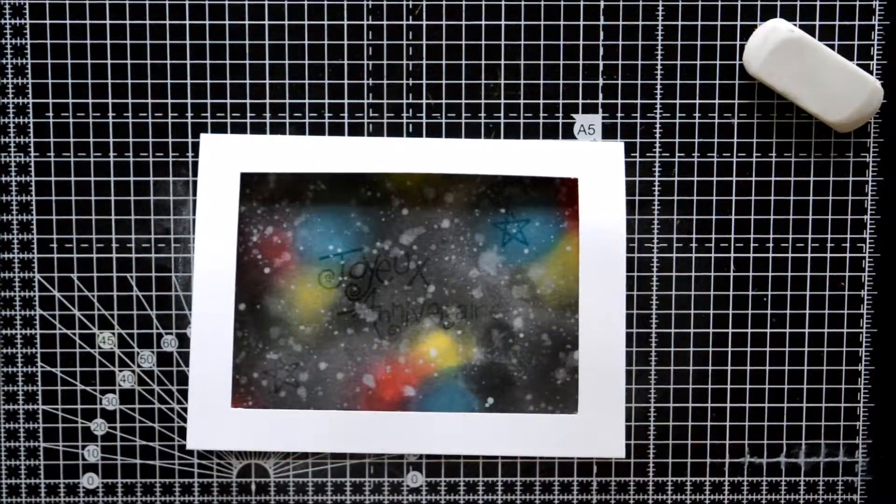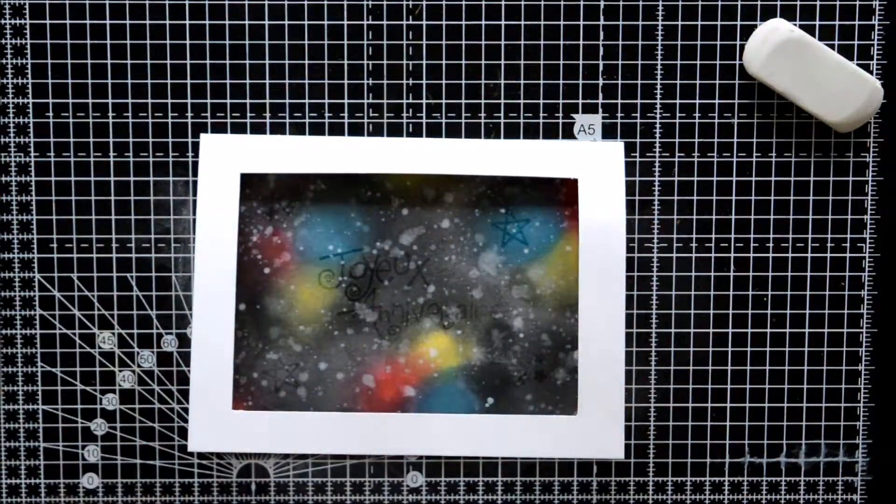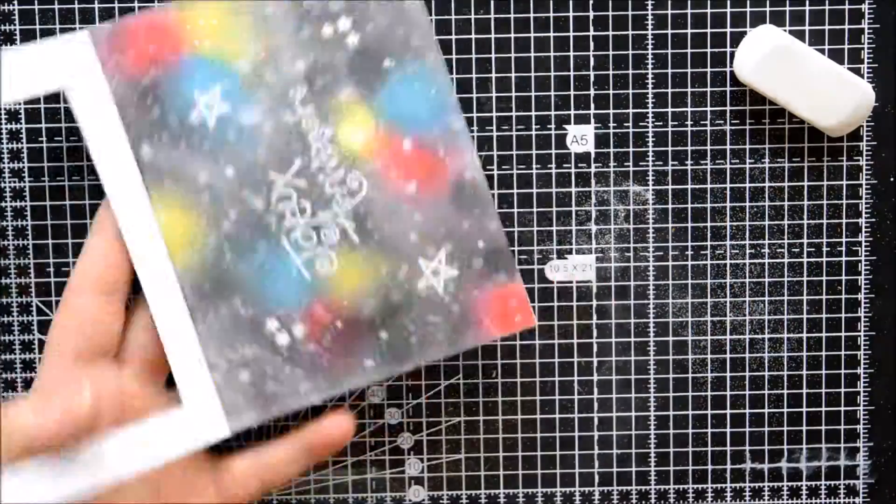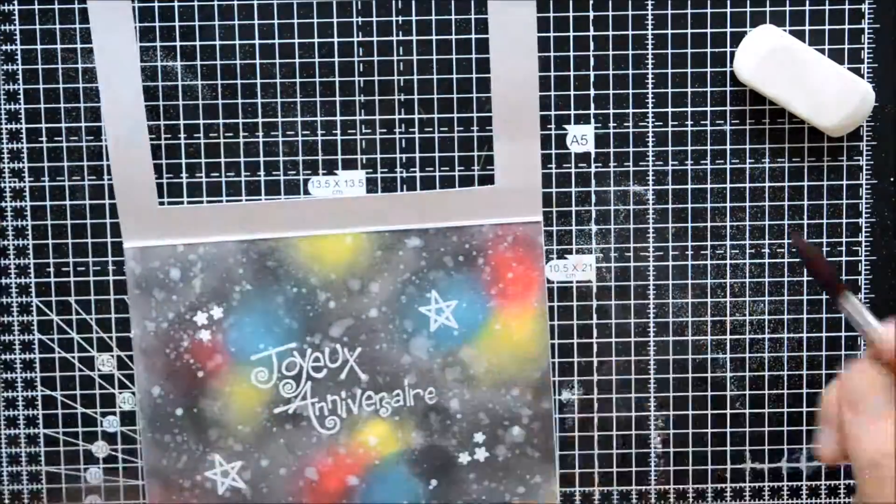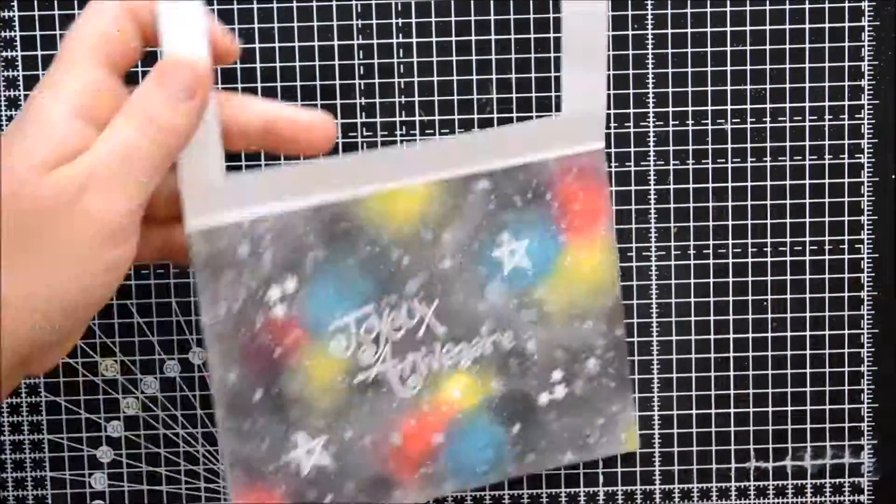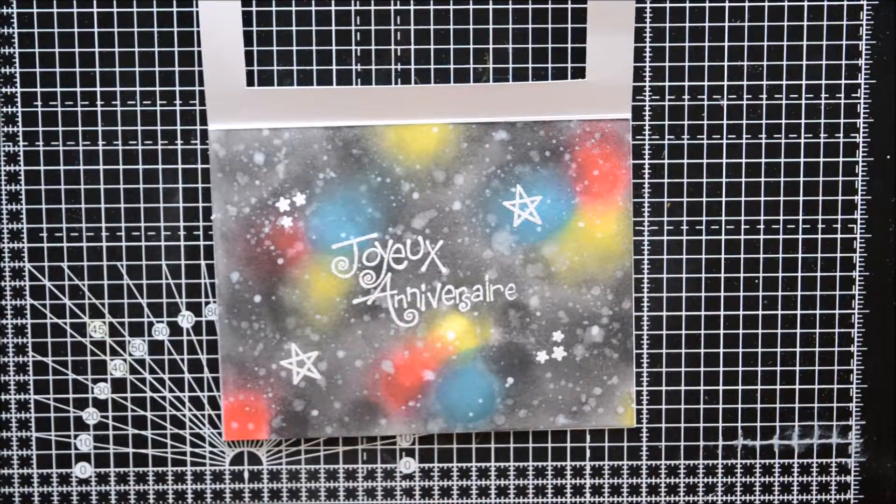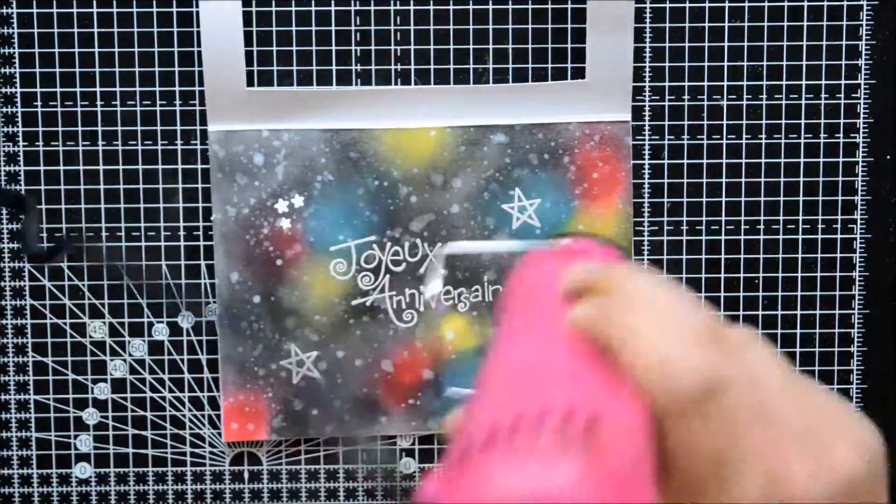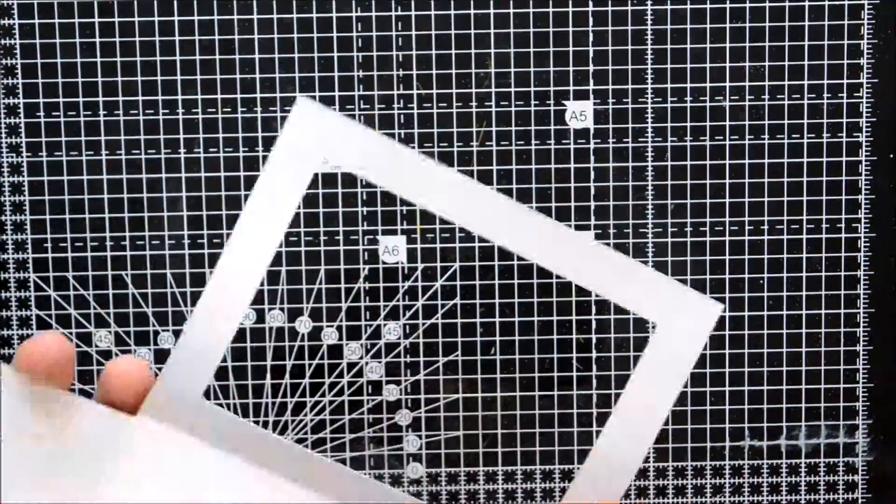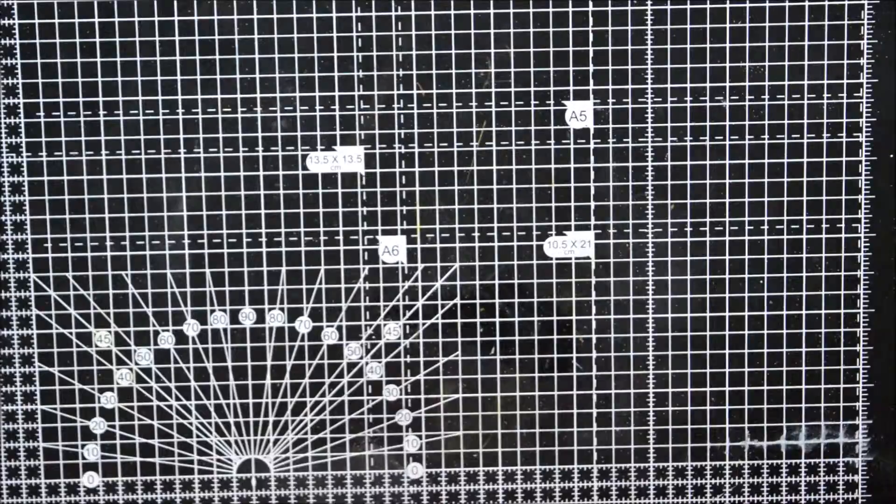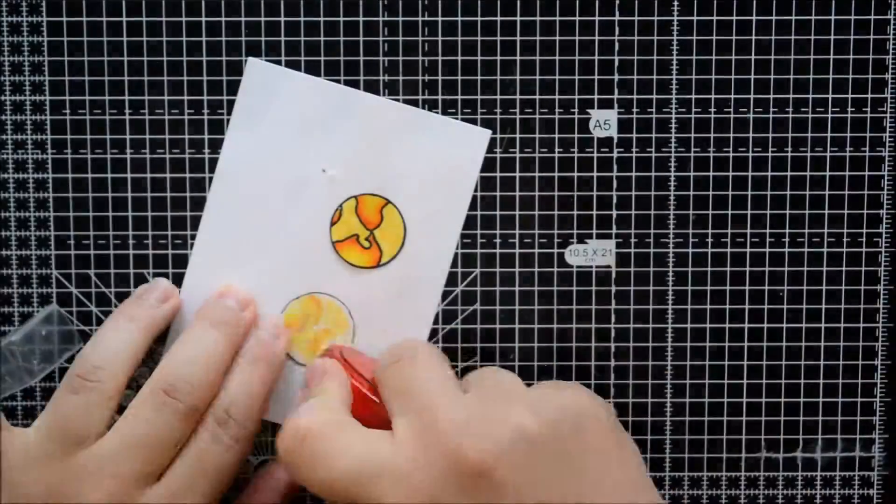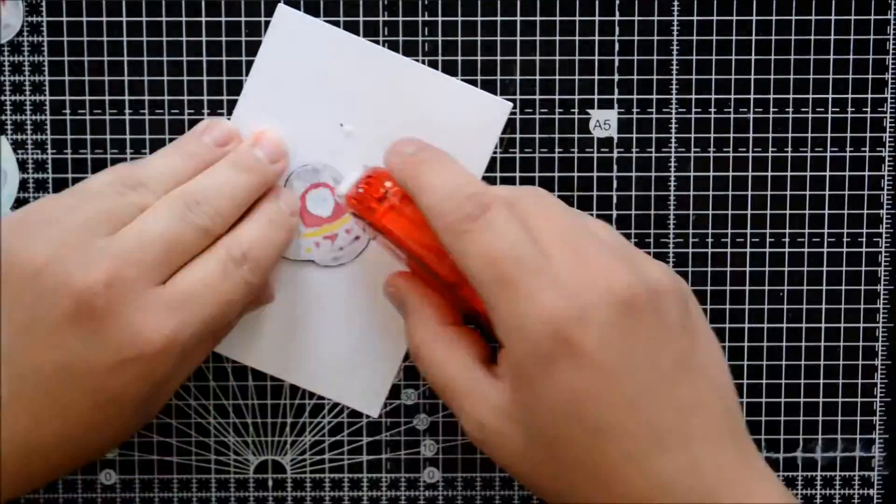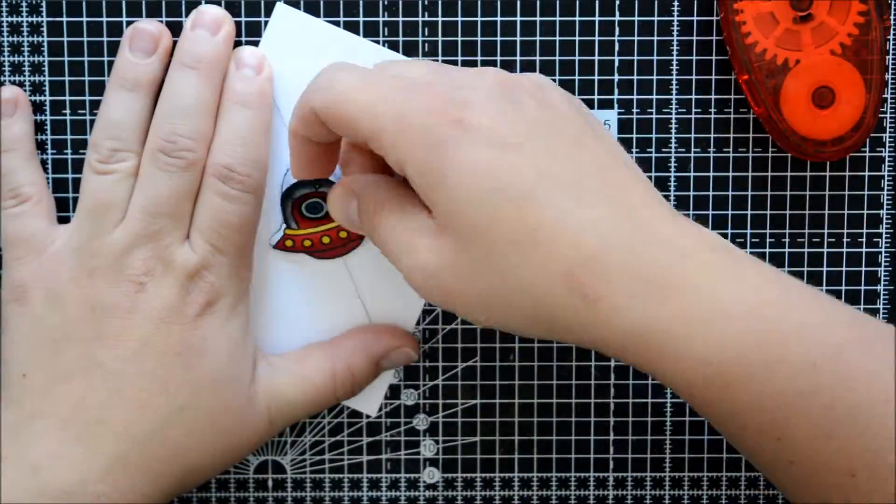I used an embossing buddy bag to remove the static. I stamped my greeting and little images with some VersaMark and used some Ranger white superfine powder to emboss. I then heat embossed with my heating gun. You let the heat gun heat up a little bit. I melted the embossing powder but not for too long because the paper started to warp, so I placed it under something really heavy after that.